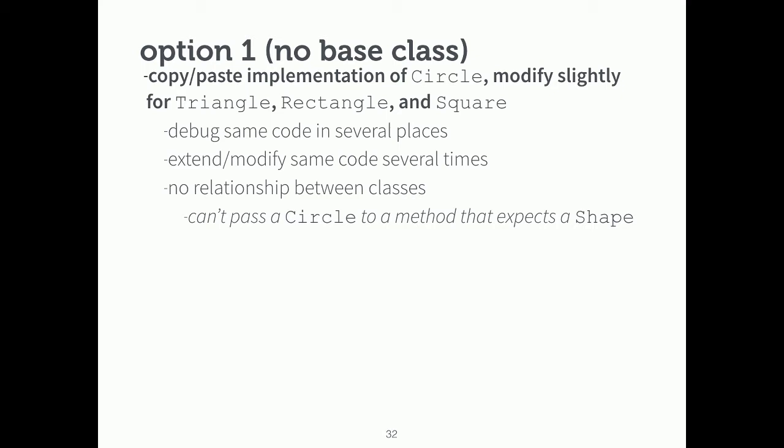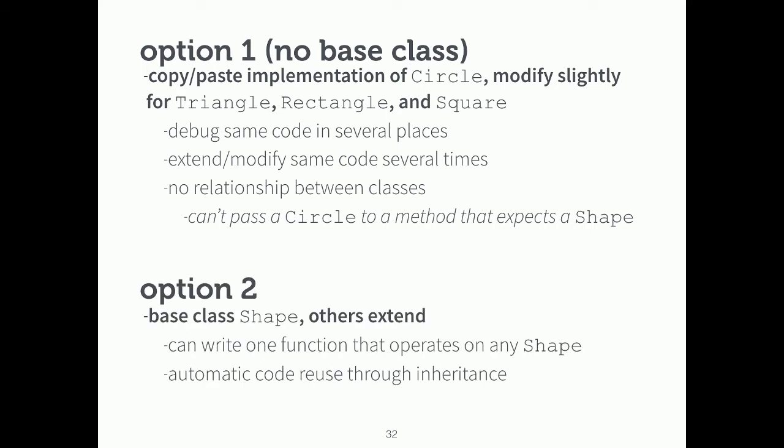As a quick recap of inheritance: option one without base classes forces you to copy and paste your implementation for each shape, modify it slightly for each one. If you copy and paste a bug, you have to debug it in every place. If you extend or modify code, you do it in each place too. There's also no inherent relationship between classes — you can't pass a circle to a method expecting a shape or have an ArrayList of shapes. Option two uses base classes with more specific classes extending them, letting you write one function operating on any shape, with automatic code reuse through inheritance.